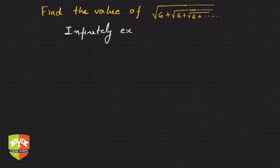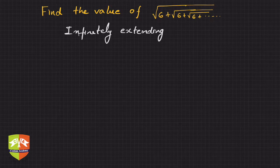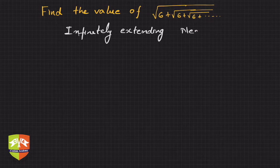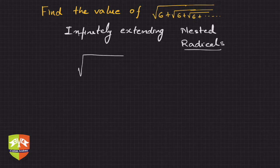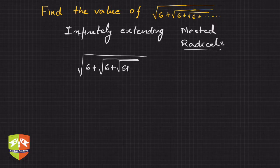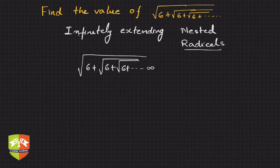Infinitely extending nested radicals. Okay, what is a nested radical? So if you see here, it is under root 6 plus under root 6 plus under root 6 plus, and it is going on till infinity. Now this kind of radical is called infinitely extending nested radical.